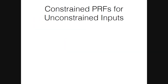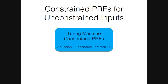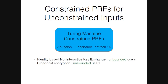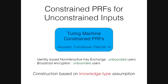A natural question is whether we can construct something for an unbounded number of users, which would require constraints working on unbounded-length inputs. This question was first studied by Abusala, Fuchs, Bauer, and Pieterczyk in 2014, and they gave a constrained PRF construction where the constraint could be expressed as a Turing machine — probably the most general thing possible — giving identity-based non-interactive key exchange for unbounded users and broadcast encryption for unbounded users.